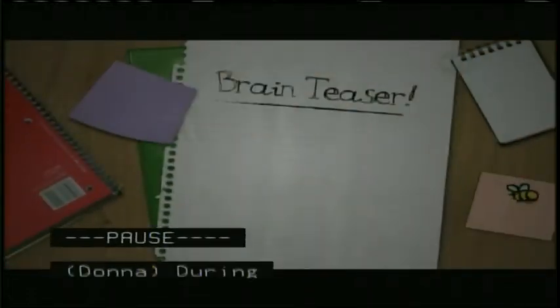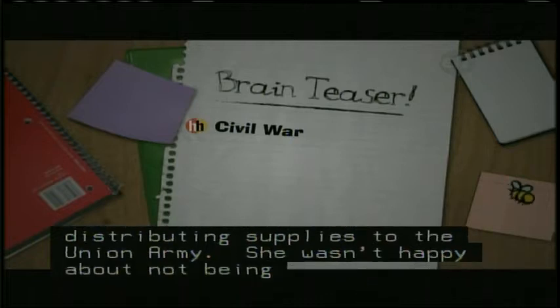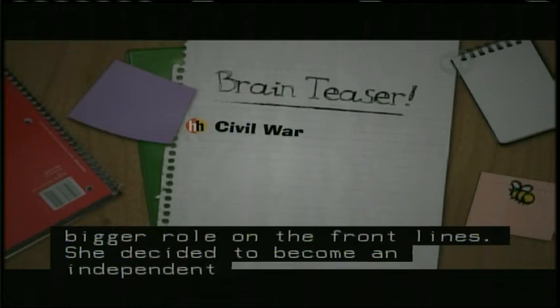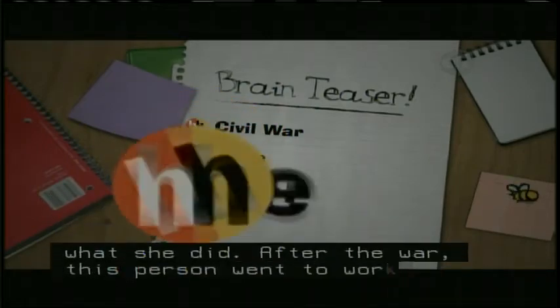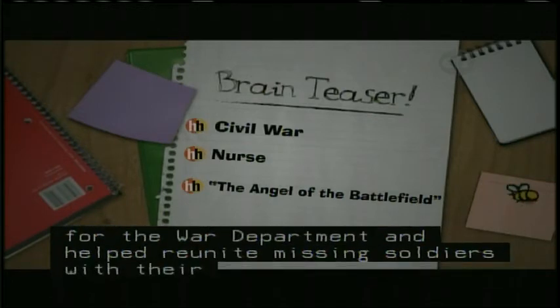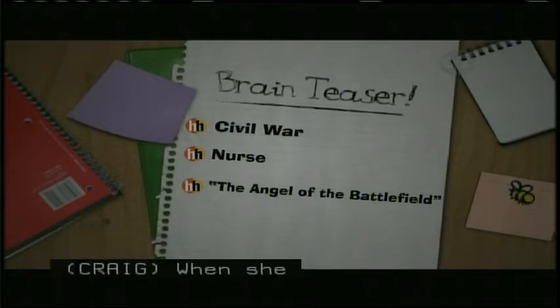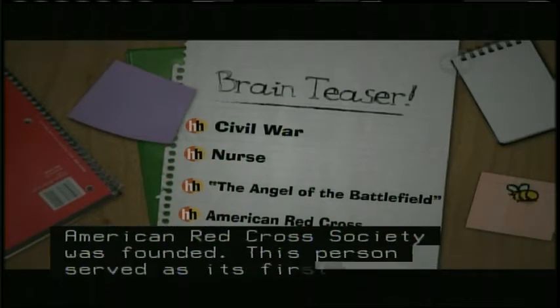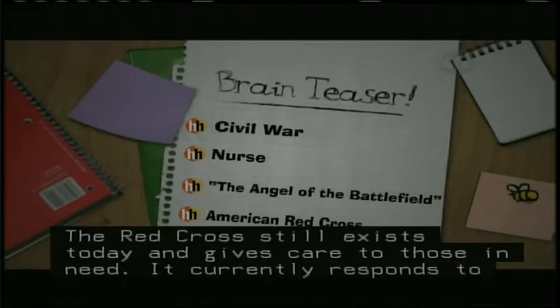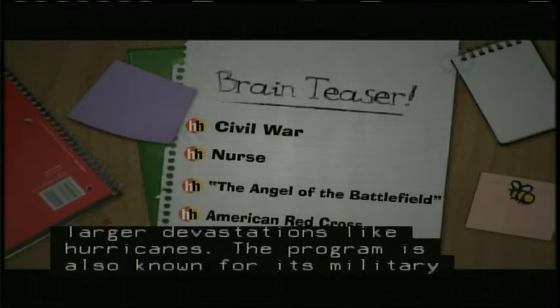Today is Wednesday, and that means it's time for our brain teaser. During the Civil War, this person had a calling to help others. At first, she started collecting and distributing supplies to the Union Army. She wasn't happy about not being able to take a bigger role on the front lines. She decided to become an independent nurse and care for wounded soldiers. She was given the nickname, the Angel of the Battlefield. After the war, this person went to work for the War Department and helped reunite missing soldiers with their families. Later, while visiting Europe, this person worked on the relief organization called the International Red Cross. When she returned home, she wanted to start an American branch of this organization. In 1881, the American Red Cross Society was founded. This person served as its first president. The Red Cross still exists today and gives care to those in need. It currently responds to 70,000 disasters a year, ranging from small house fires to large devastations like hurricanes. The program is also known for its military support, health and safety courses, and blood donations.